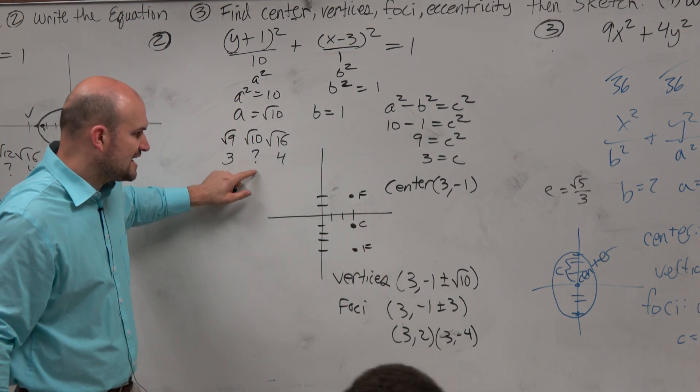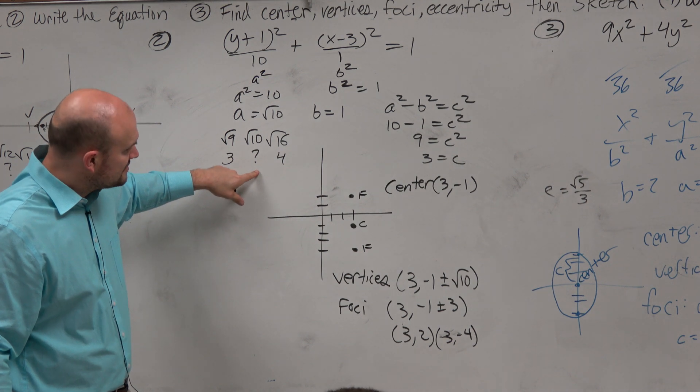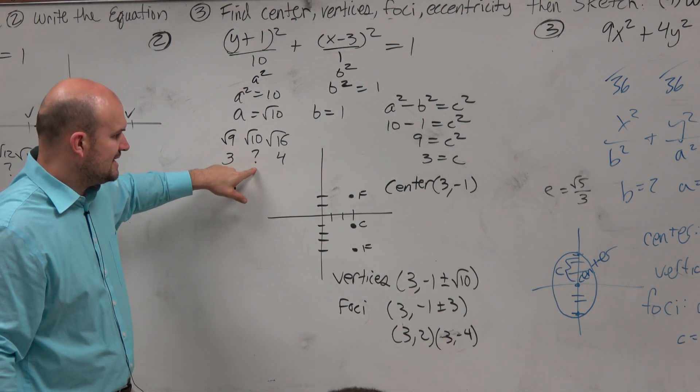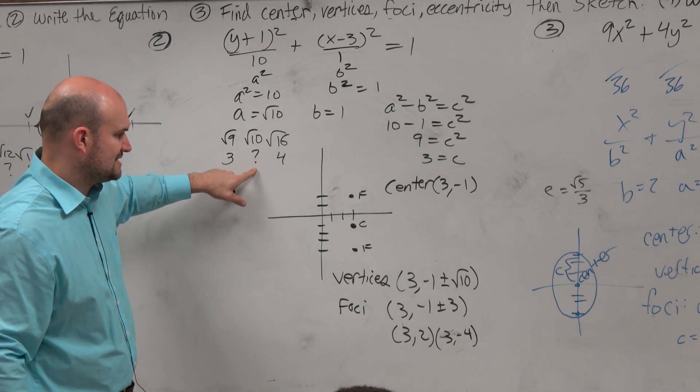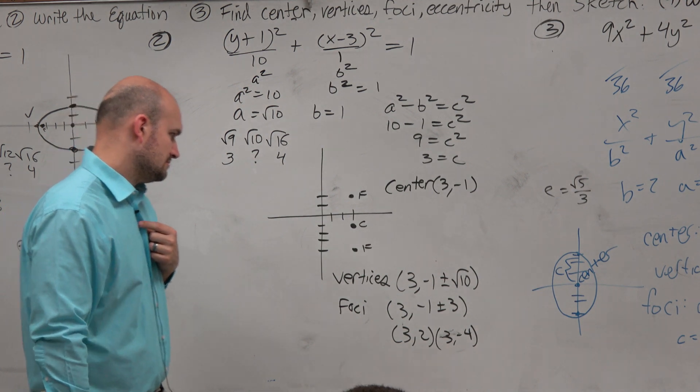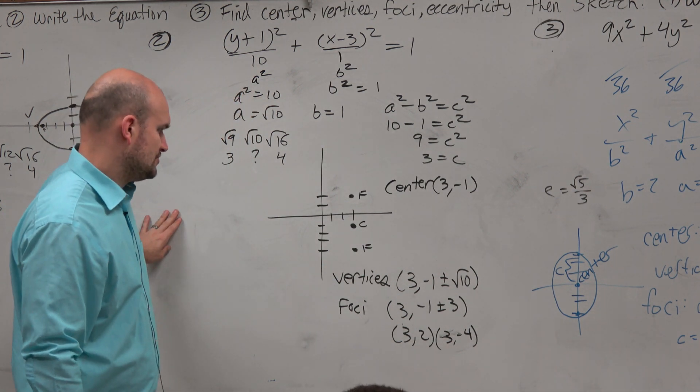Let's label these as the foci. And then the vertices, again, this is like 3 point something, right? So therefore, if I was going to do negative 1 minus 3 point something, that's going to be like 3 points minus 3.